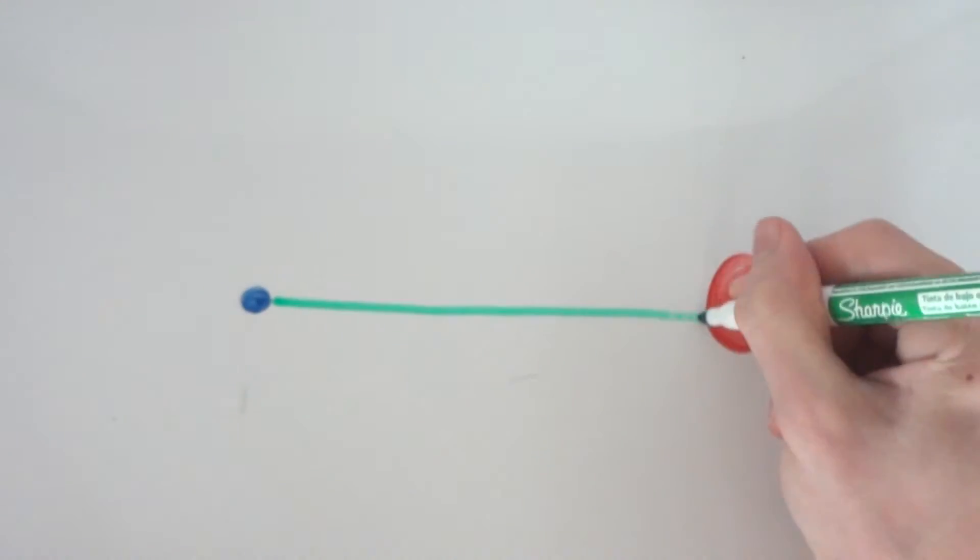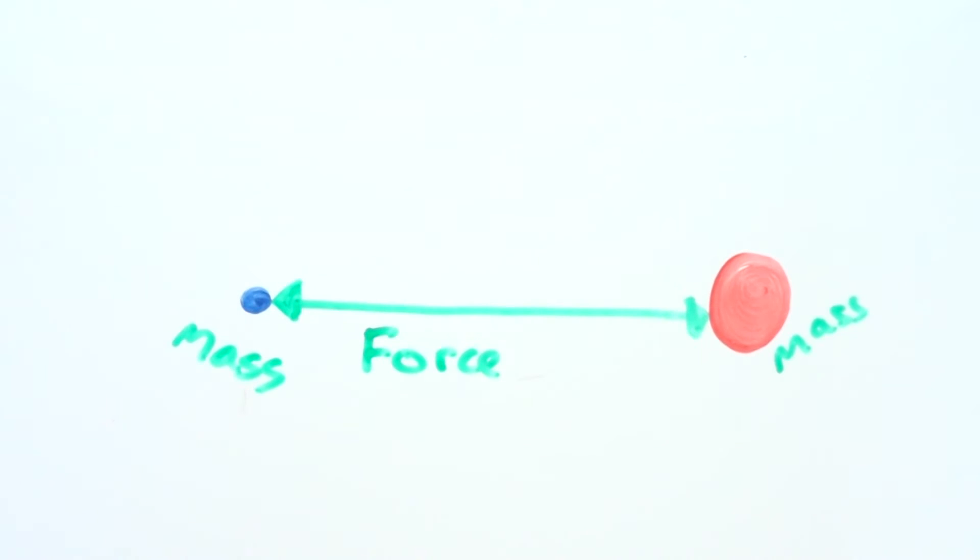Einstein also changed the way we think about gravity. At school you were taught that any two bodies in the universe attract each other with a force that is directly proportional to the product of their masses and inversely proportional to the square of the distance between them. This is Newton's theory of gravity, but Albert Einstein had a theory which would change the way we think about gravity forever.